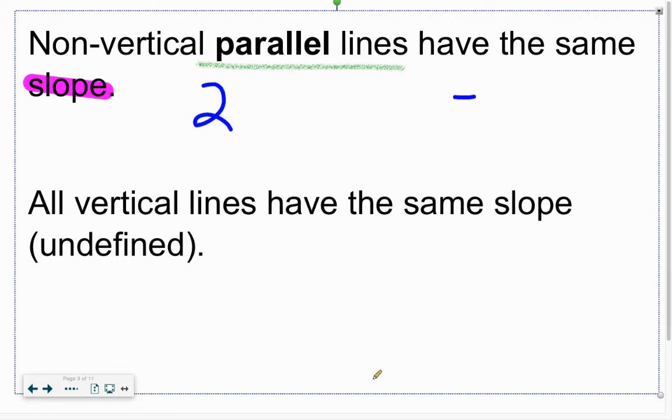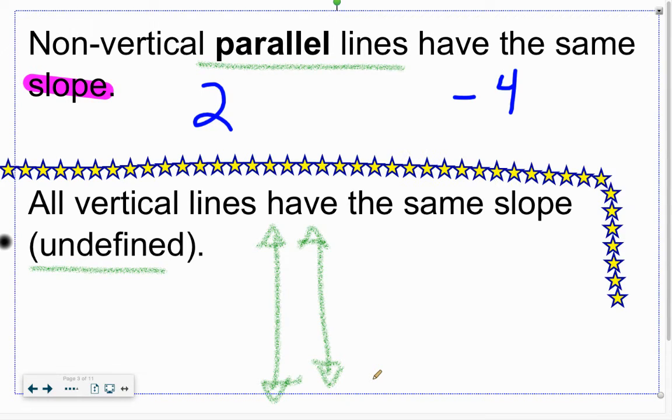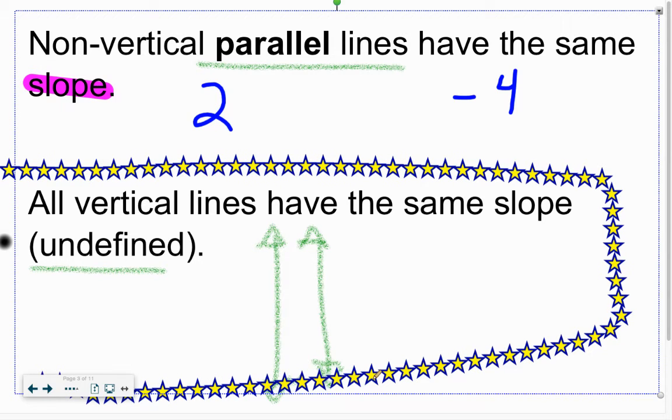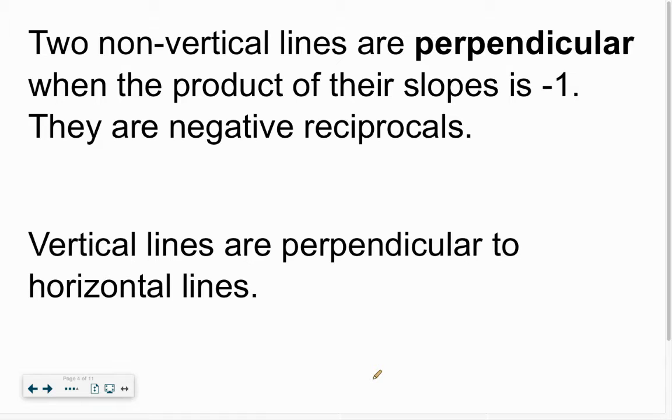And then here by definition, in a sense, vertical lines will always be parallel because they're going straight up and down. Even though they have the same slope undefined, you may want to put a star by that, or a star completely around it. That'll come into play because vertical lines are always parallel.